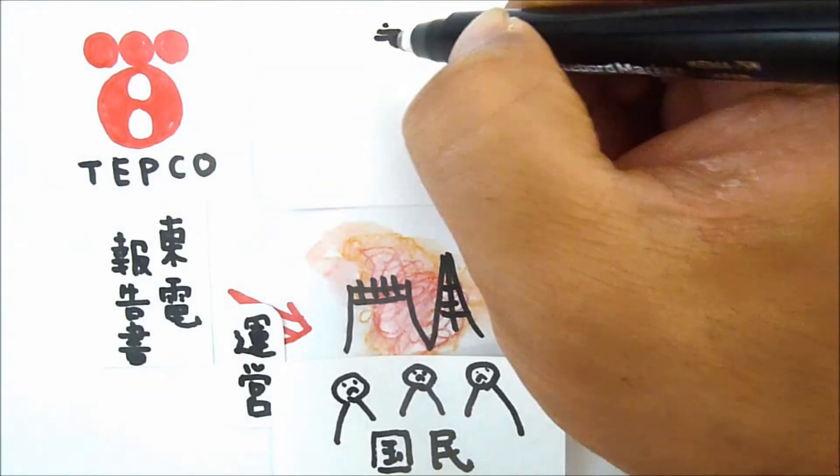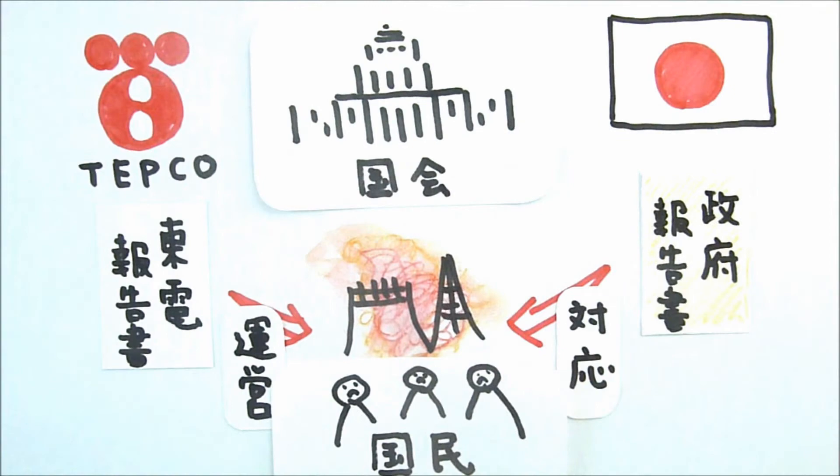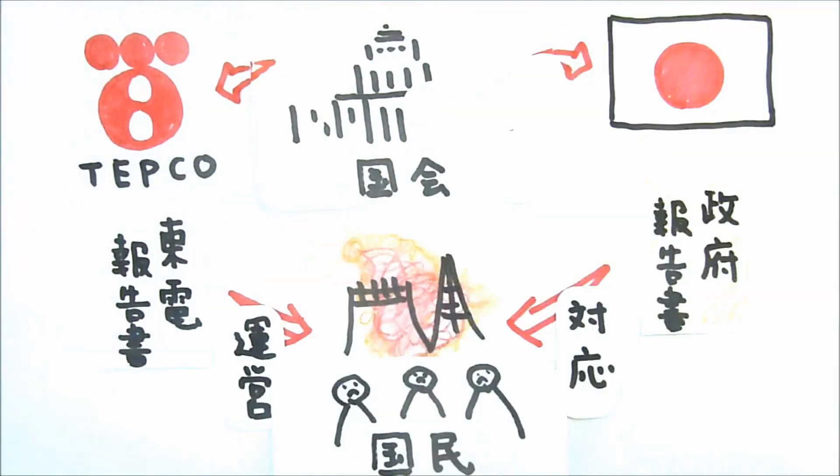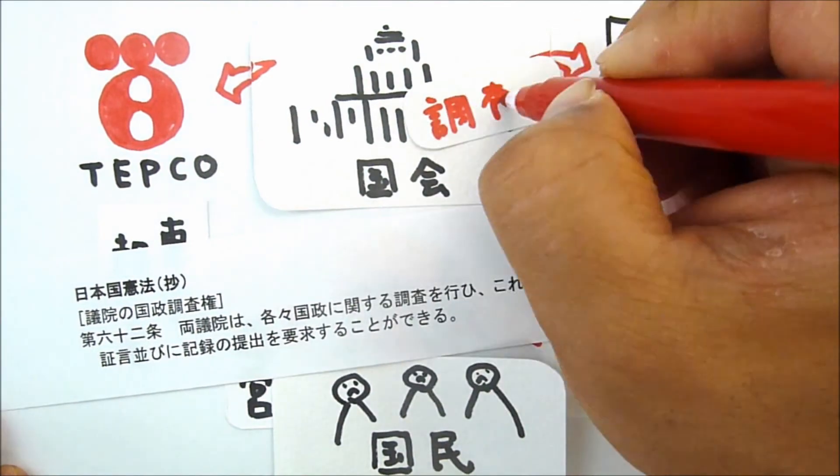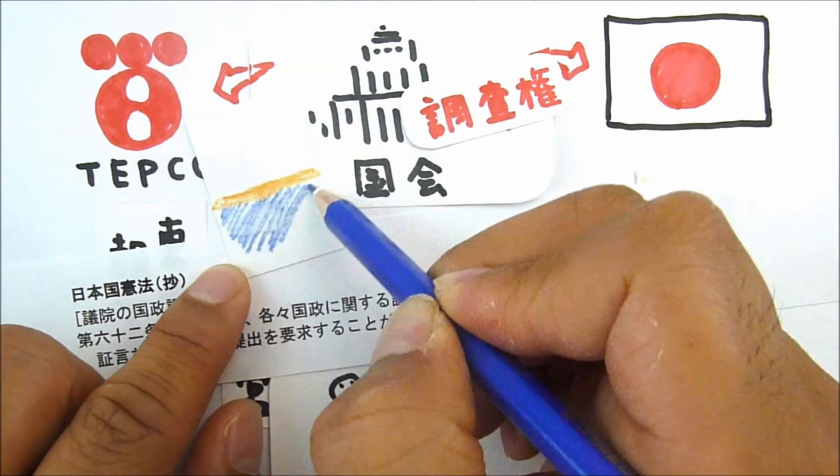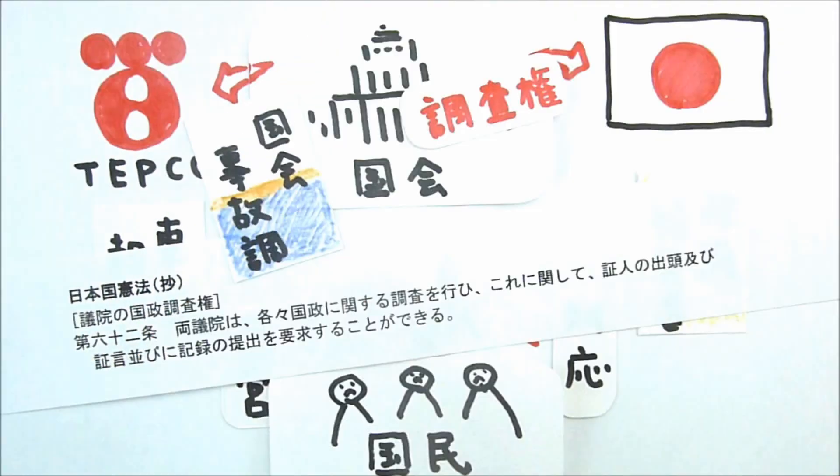That is why the Japanese parliament, which represents the people, decided to establish an independent commission to investigate the accident. While this is a standard procedure in most other countries, it is the first independent commission ever to be created in the history of Japan.